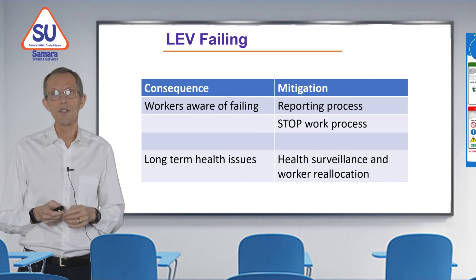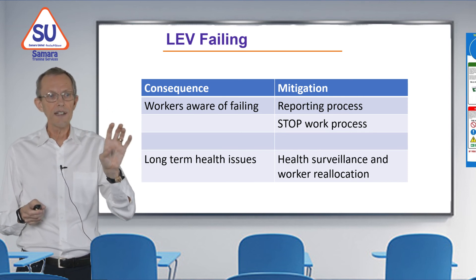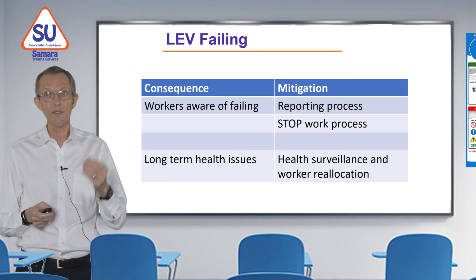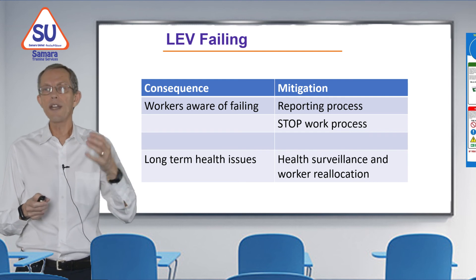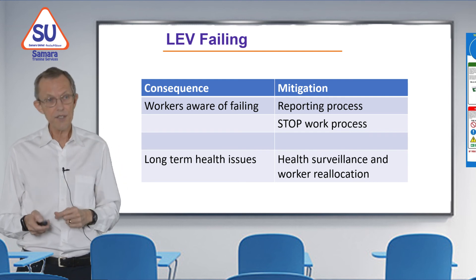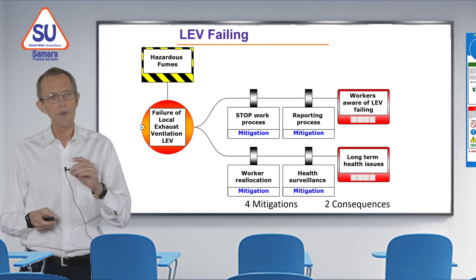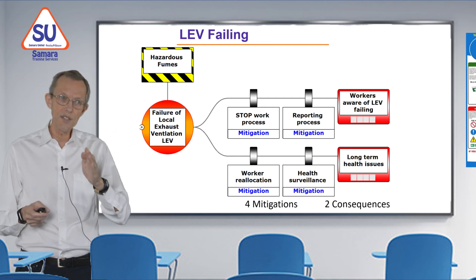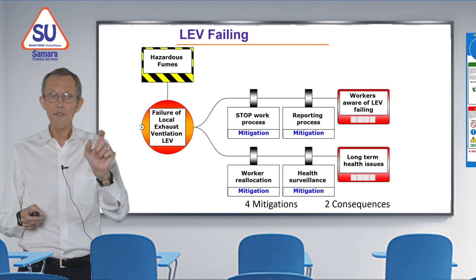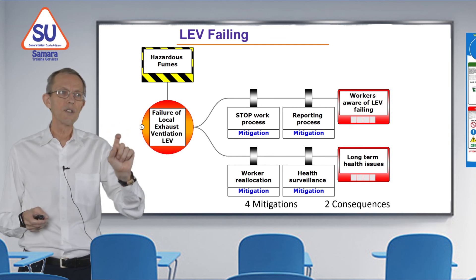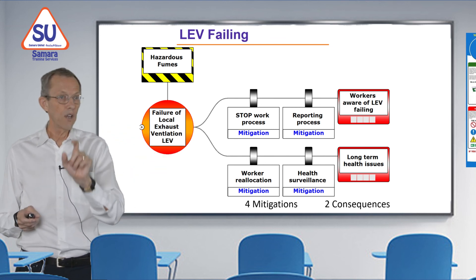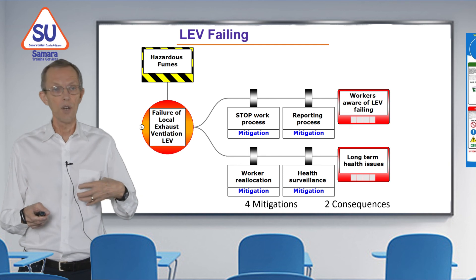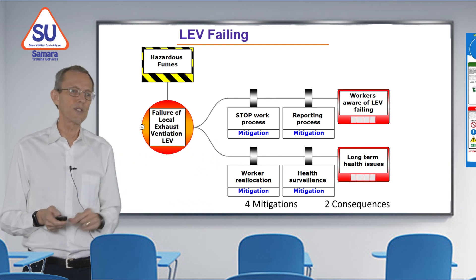The second consequence is long-term health issues. If the system is failing, workers will be breathing some contamination. We can measure their health through health surveillance, or we could relocate the workers somewhere else. On the bow tie we end up with two consequences each with two mitigations: if workers are aware of failing, they can report it or stop the work; if there are long-term health issues, we measure and record health — for example noting lungs are not working well — and we can relocate workers to a safer place.